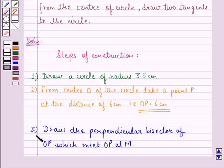Step 3: Draw the perpendicular bisector of OP which meets OP at M.